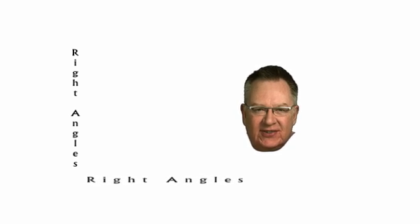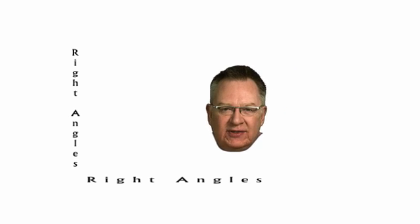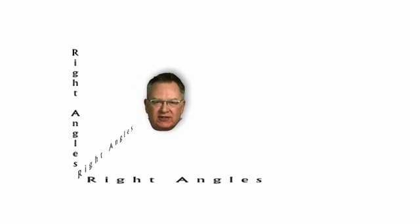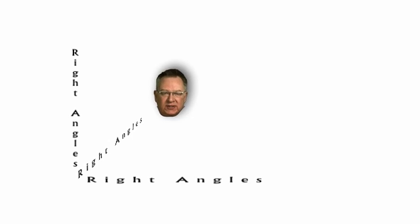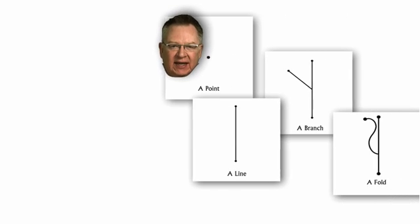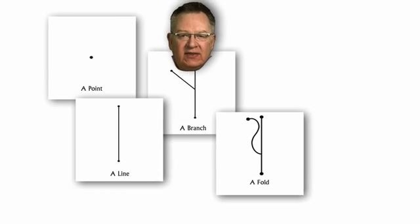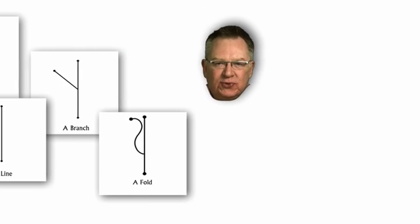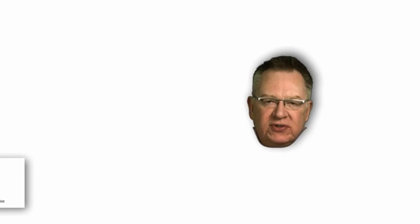How does this work? It's because each additional spatial dimension is at right angles to the one before. And the tricky part for us 3D creatures is trying to find ways to allow our brains to conceive of what 'right angles' means as we try to imagine each additional spatial dimension beyond the three with which we're so familiar. The point, line, branch, fold imagery that my project uses is another very similar way of helping us visualize additional spatial dimensions using a logical consistency which works no matter what spatial dimension you choose to start from.